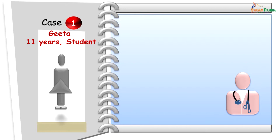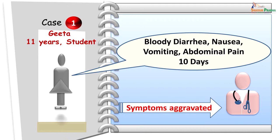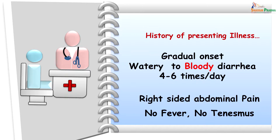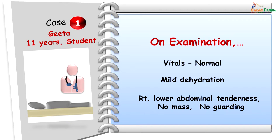This was a case: Geeta, an 11 year old student, who came to us with complaints of bloody diarrhea, nausea, vomiting, and abdominal pain. She had these complaints for more than 10 days and only approached the doctor when symptoms aggravated. Parents told us the disease was gradual in onset — she was fine about 15 days back, then started having watery diarrhea which gradually turned to bloody diarrhea. Frequency was about 4 to 6 times a day with right-sided, though diffuse, abdominal pain. She did not have any fever, severe pain while passing motions, or tenesmus.